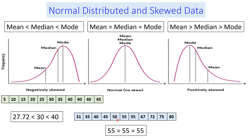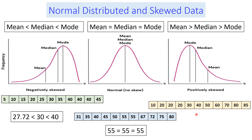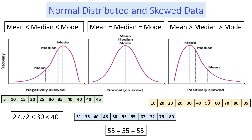Here is another example for normally distributed data. And for the positively skewed data, as you can see, it is positively skewed, so there are extreme values on the right side which affect the mean. In the negatively skewed case, there are extreme values on the left. But in the positively skewed case, the extreme values affect the mean such that the mean is greater than the median, and the median is greater than the mode.